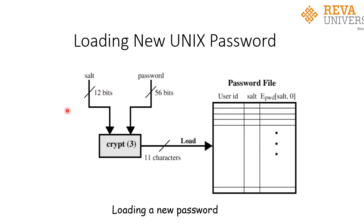Looking at the diagram, you can observe a password file having a user ID with its corresponding SALT and encrypted password, generated using the SALT with a 64-bit block of zeros as input. Crypt3 is the encryption routine utilizing DES. It takes the password as a key input and SALT as a 12-bit input. Using this SALT and the 56-bit password, it generates 11 characters, which are loaded into the password file for the corresponding user ID, along with the SALT.